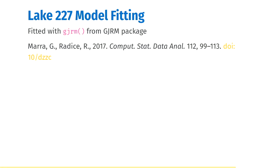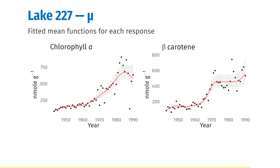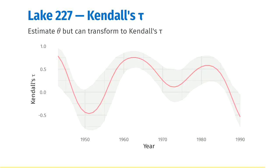This is fitted with the GJRM function from the package of the same name, and a paper by Jean-Pierre Marra and colleagues explains how this works. So this is our fitted trend — our mean in chlorophyll A and beta-carotene — showing a general increase overall, although we do capture a flattening off in beta-carotene over time.